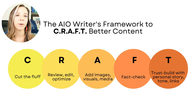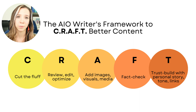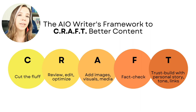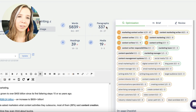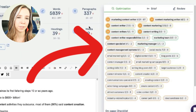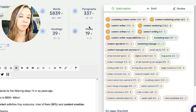C stands for cutting the fluff. You want to ruthlessly cut the fluff and get to the chase whenever you're describing answers or solutions for your audience. Next, R — you want to review, edit, and optimize your content. This means pulling in more related keywords. You don't even have to go research those keywords if you're using Content at Scale; on the right in the editor you can see the keywords that are missing and easily work those in. The keywords turn green once you've worked them in enough times, and the numbers tell you how many times you need to use them.